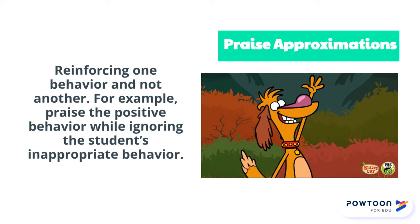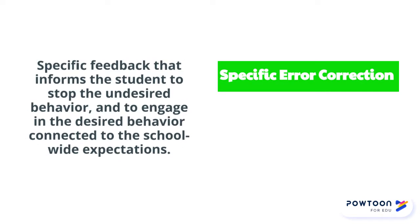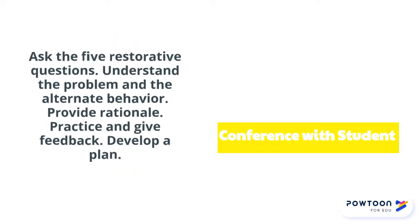For example, you might say, 'Johnny, I love that you raised your hand.' Using specific error correction means giving specific feedback on undesired behavior, how to engage in desired behavior, and connecting that to school-wide expectations. When you provide choice, you give appropriate alternative choices to lead to the same target — you might move a student or give them alternate supplies to complete the task. When you conference with a student, you would ask the five restorative questions and seek to understand the problem and the alternate behavior together.